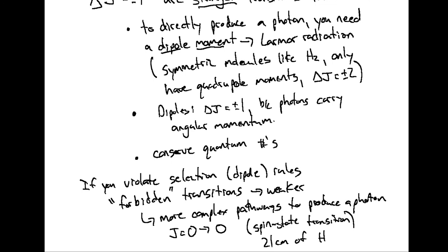So that's the last piece needed to understand rotational transitions: selection rules about how we can transition between different angular momentum states in a molecule. Roughly, if you have an asymmetric molecule you'll probably have a dipole moment, and if you have a dipole moment, angular momentum changes by units of one in a photon transition.